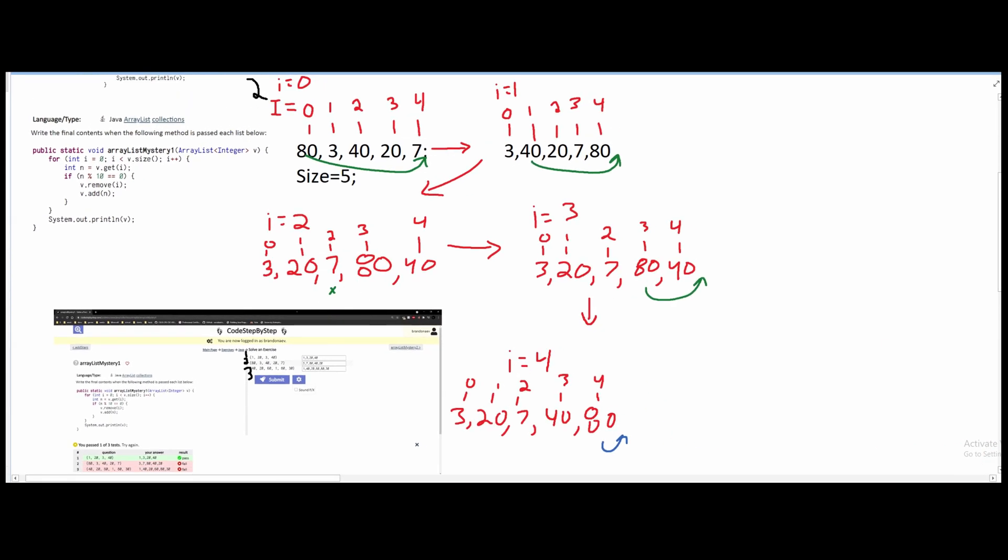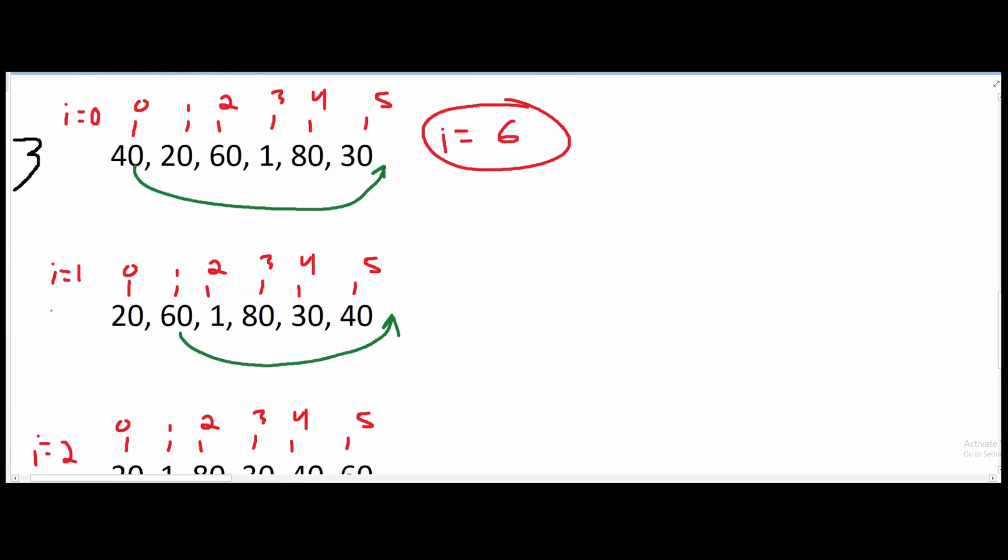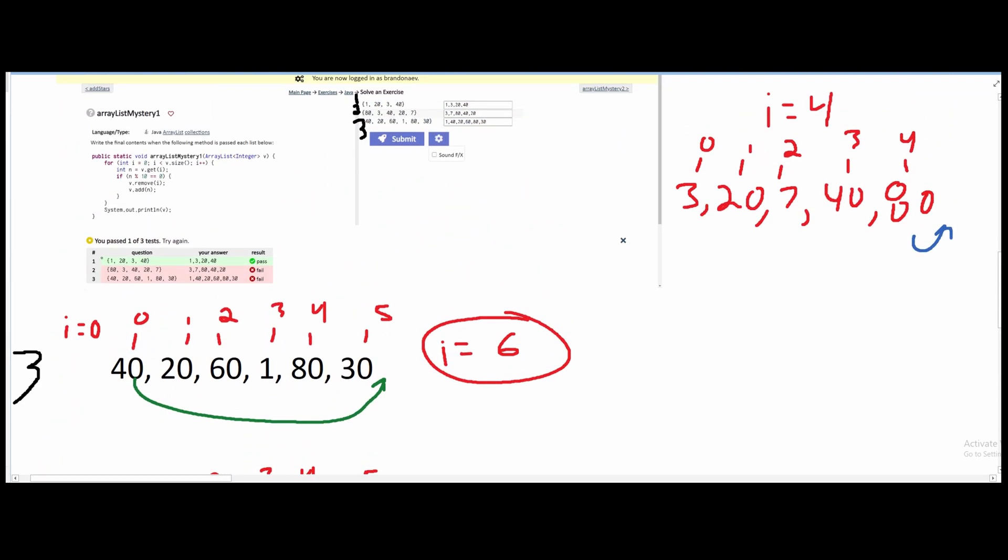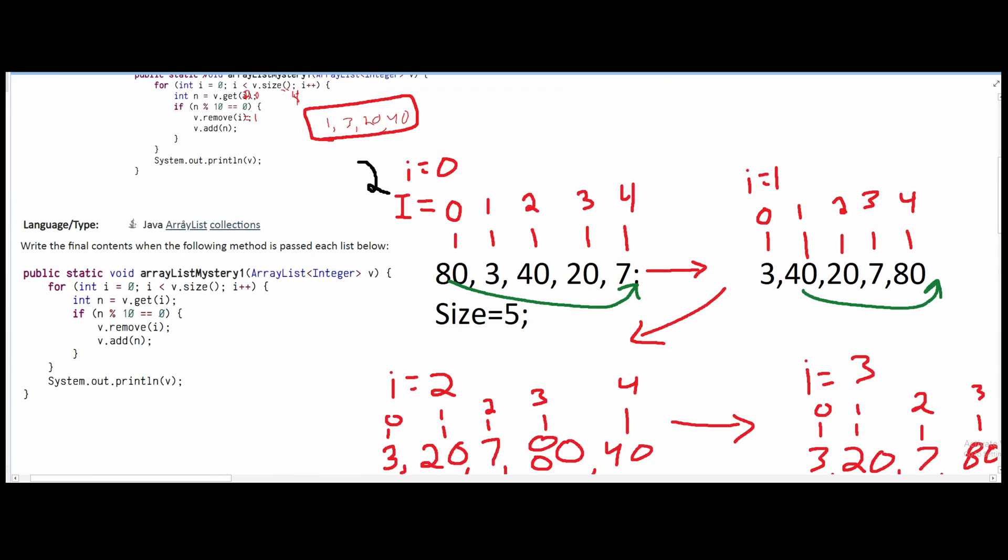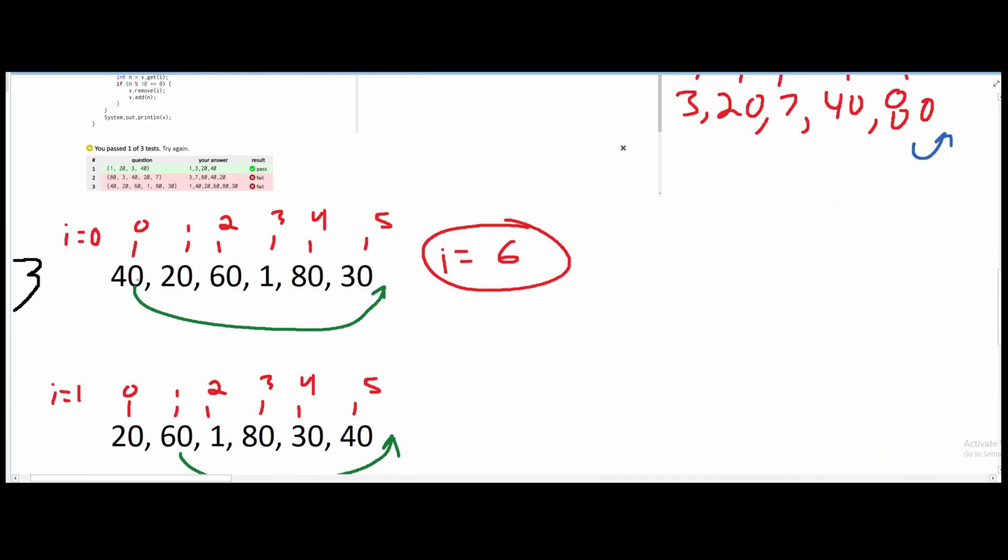So we have to look at 5 indexes since this is less than, not less than or equal. We're looking at index 0. Index 0 is even. So it gets pushed to the back behind 30.